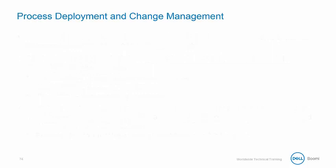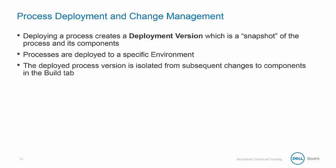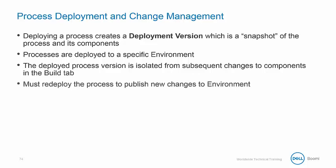Once the process is created and working to your satisfaction, it's time to deploy. When you deploy a process, it creates a snapshot of the process and the components at a given time. It takes the current revision of each component and bundles them together into a single deployment version. The process is then deployed to a specific environment, and the deployed process version is isolated from any subsequent changes to components that occur in the build tab.